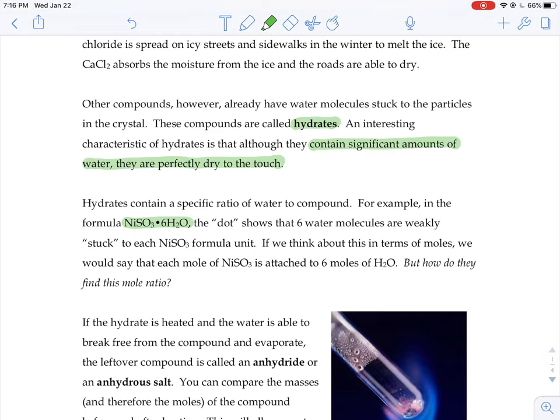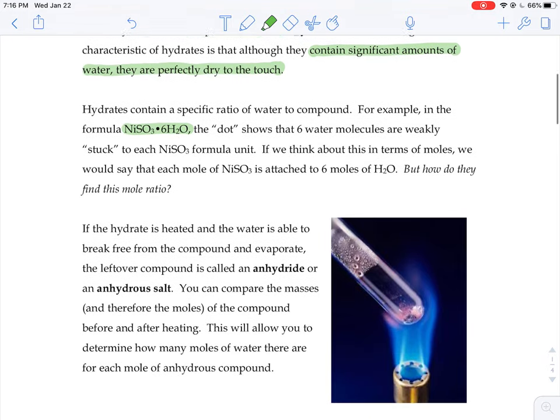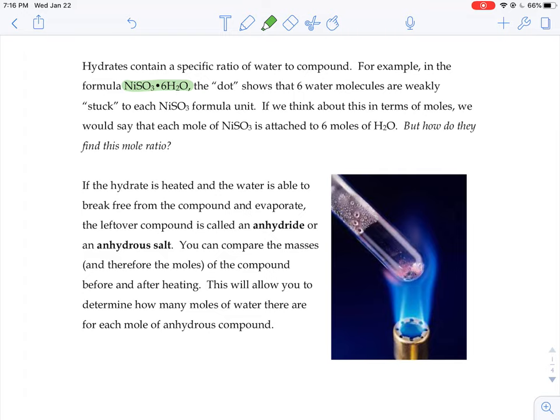But how do they find that mole ratio? What we're going to do in the lab is heat up our hydrate. The water portion of your hydrate is able to break free and evaporate, and then it just leaves the anhydrous stuff behind, the without water stuff. And we can compare the masses and therefore the moles of the compound before and after heating. So when we do that comparison of masses, that allows us to figure out how many moles of water there must be for every moles worth of anhydrous compound.